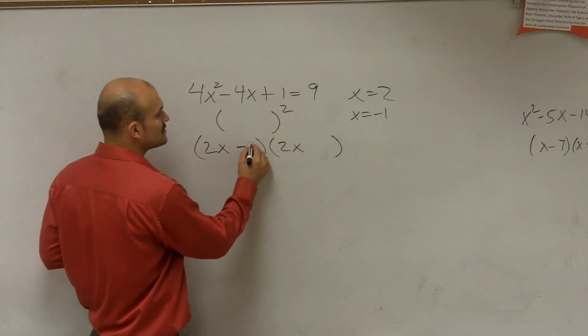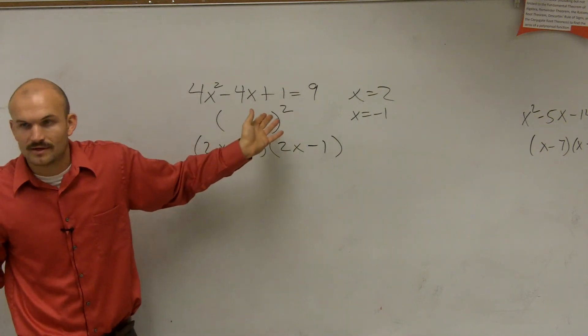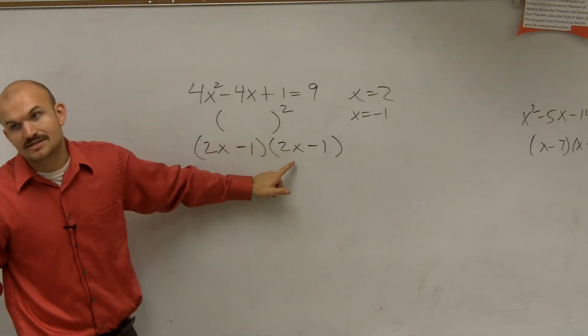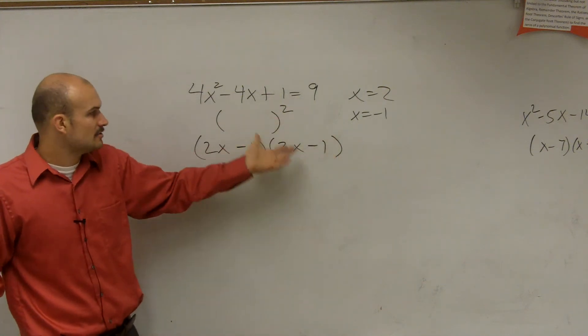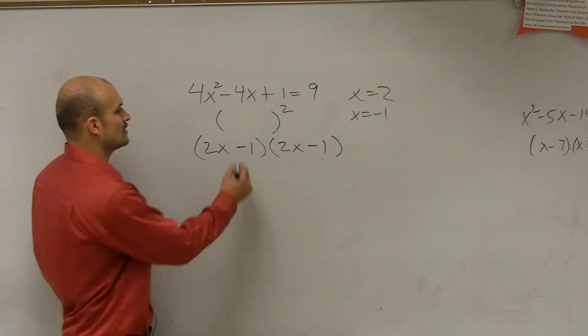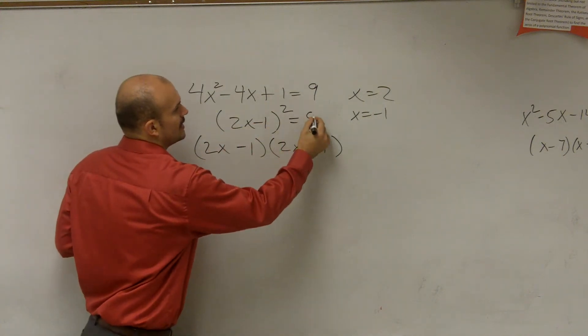However, I know that I'm going to use negative 1 and negative 1 because my middle term is negative. Because negative 1 times 2x is negative 2x, and 2x times negative 1 is, again, negative 2x. Add those up together, you're going to get negative 4x. So my answer is 2x minus 1 squared equals 9.